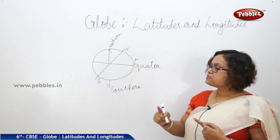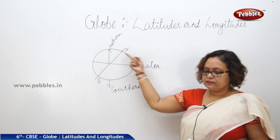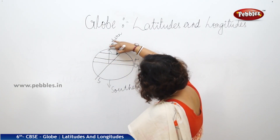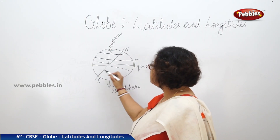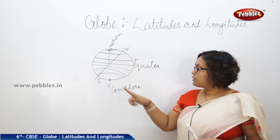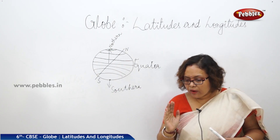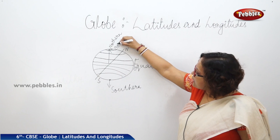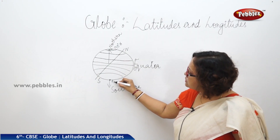If you observe the globe carefully, you will find it is not only the equator, but there are many other parallel circles. These parallel circles cover the Earth and ultimately become just like a dot at the North Pole, and the same way in the southern hemisphere, becoming a dot at the South Pole. The equator is measured as 0 degrees, the North Pole as 90 degrees north, and the South Pole as 90 degrees south.